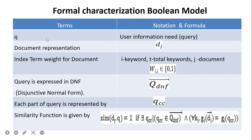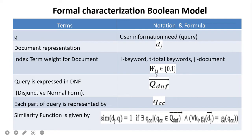The formal characterization of the Boolean model uses the following notation: q is the user query, which is a combination of AND, OR, NOT operators. Document representation is dj. The index term weight for the document is represented by wij. The weight is Boolean: if a particular keyword is present in the document, the weight is 1, otherwise it is 0. Here i is the keyword index and j is the document index.